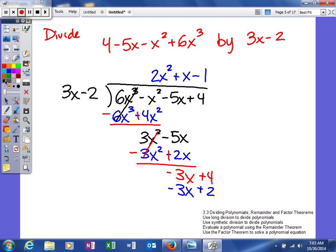I'm subtracting, so I'll go through and I'll change these, so that's going to change and cancel, and then when I change that sign and add them together, I'll get a positive 2. So my quotient is going to be 2x squared plus x minus 1, and then plus my remainder of 2 over my divisor, 3x minus 2. So that is actually my quotient plus my remainder.